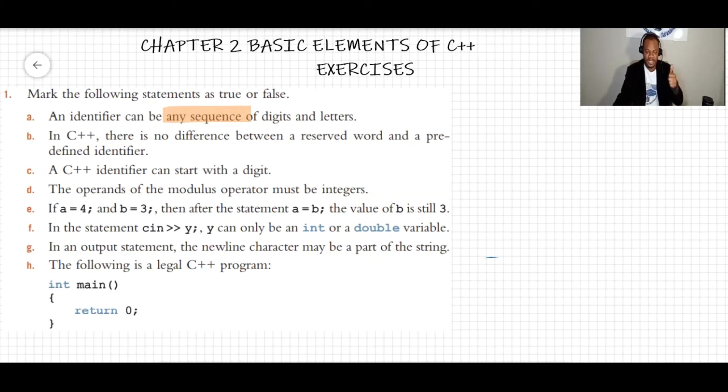The rule is that identifier must start with a letter or the underscore. So here we say this is false. We cannot have an identifier of like let's say three value one.